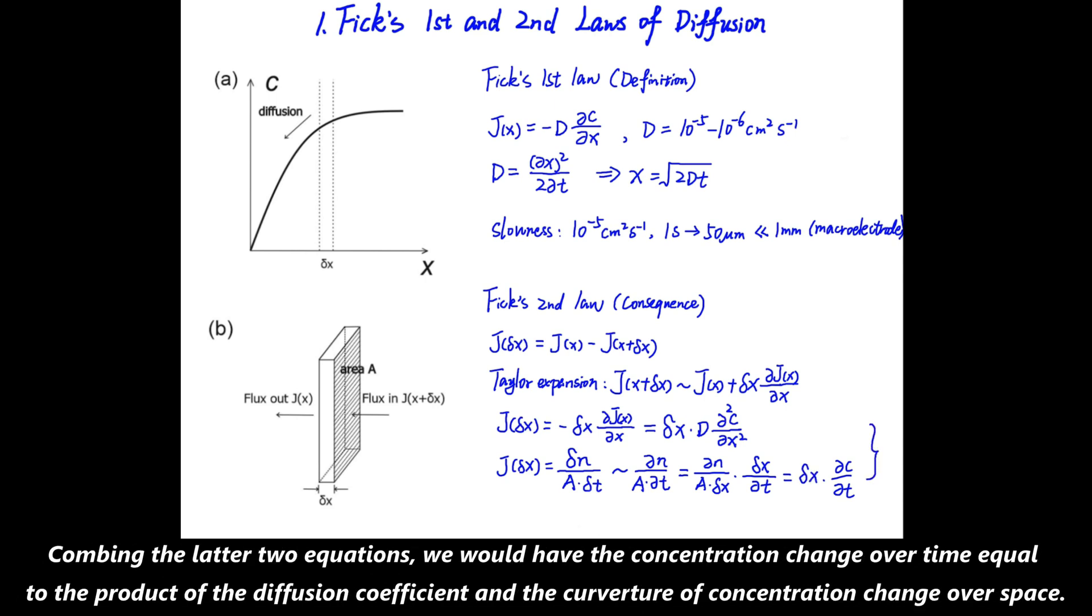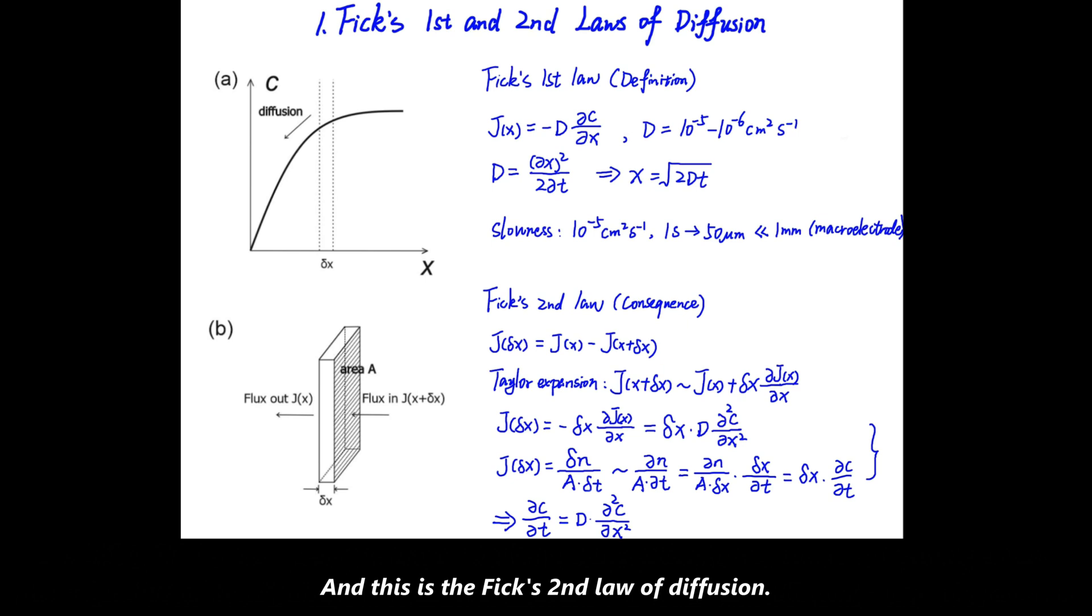Combining the latter two equations, we would have the concentration change over time equals to the product of diffusion coefficient and the curvature of concentration change over space. And this is Fick's second law of diffusion.